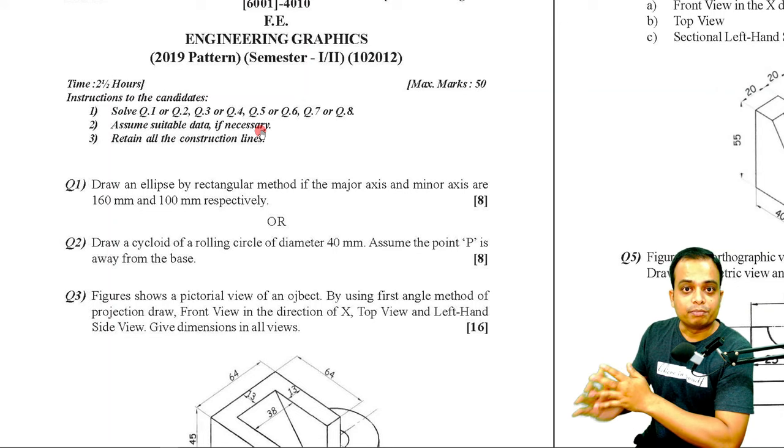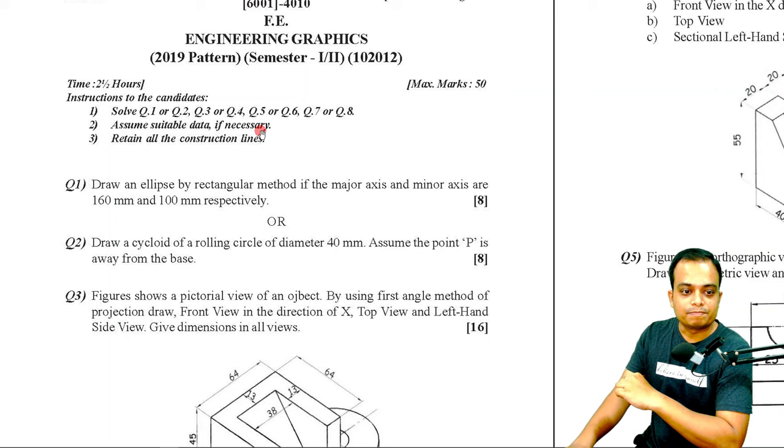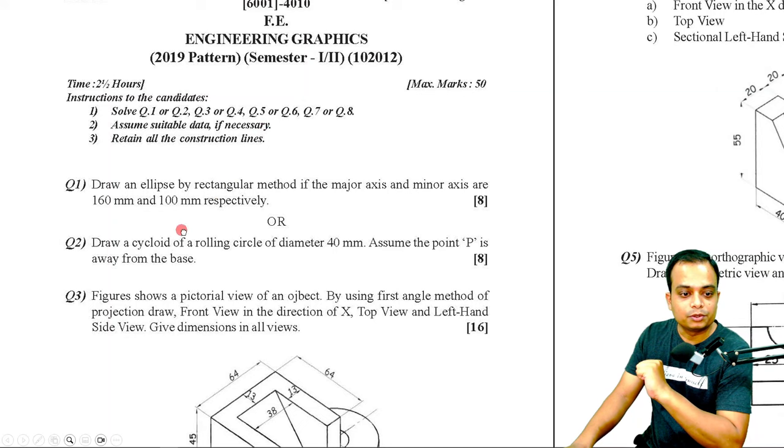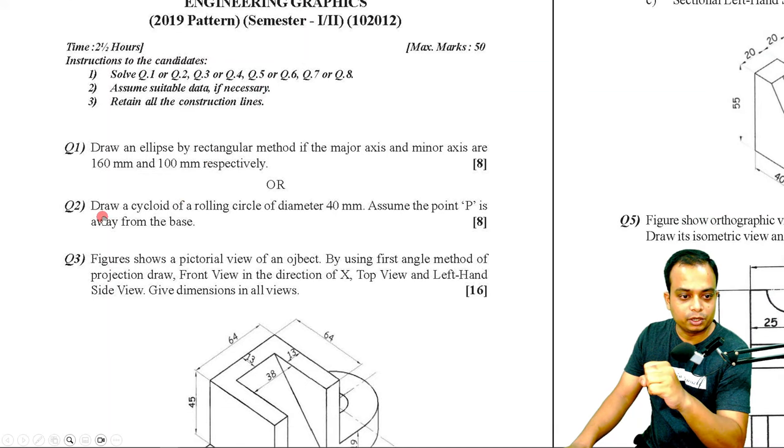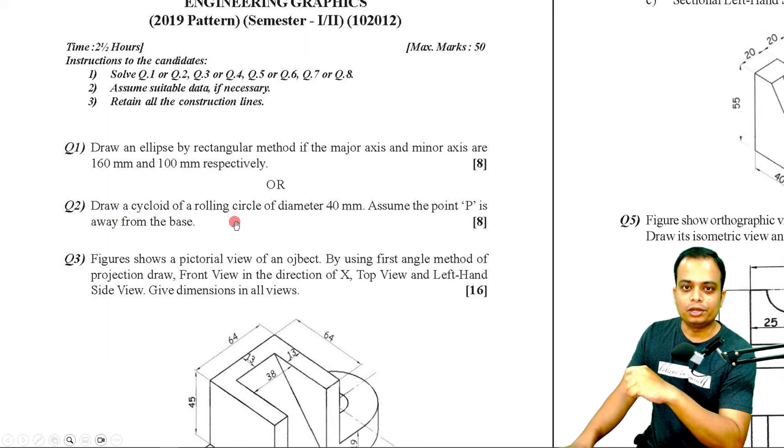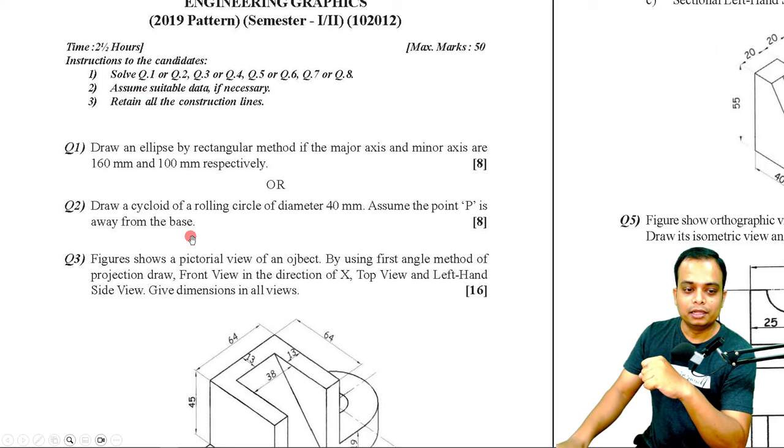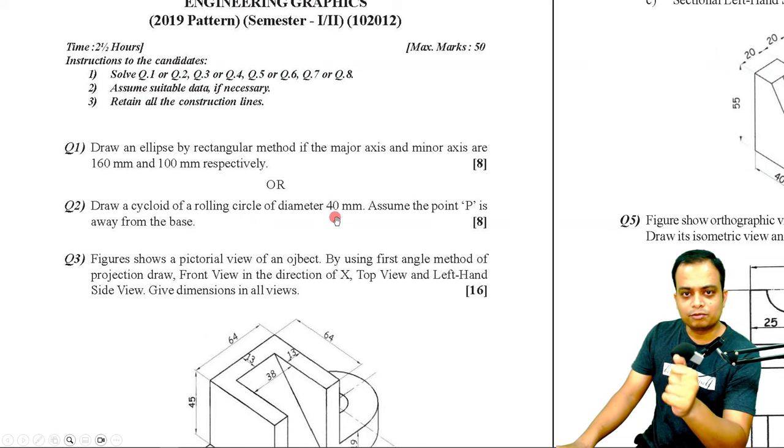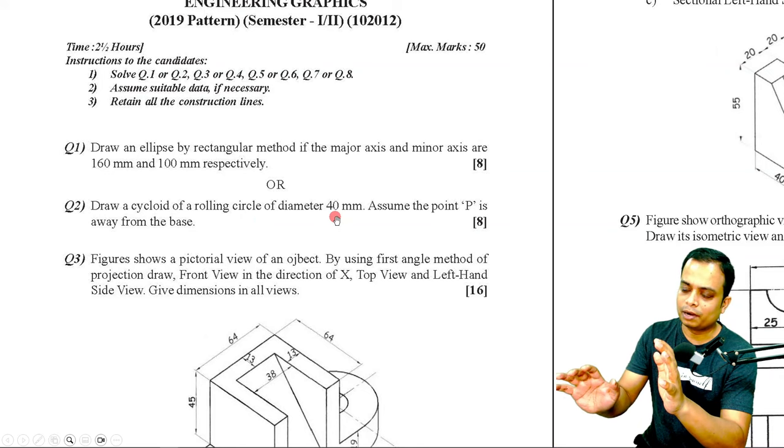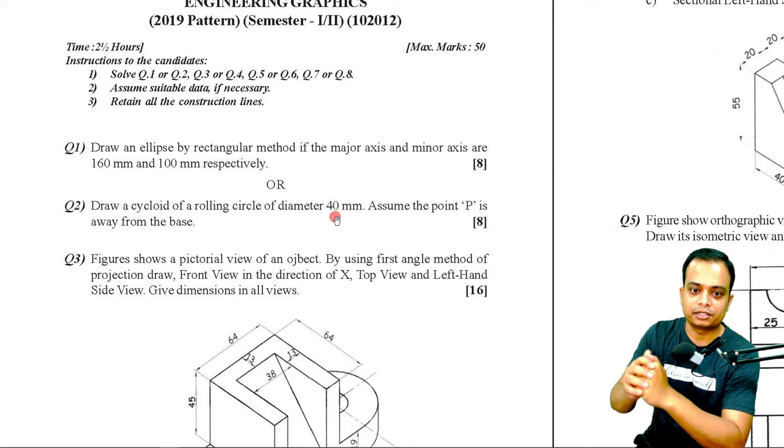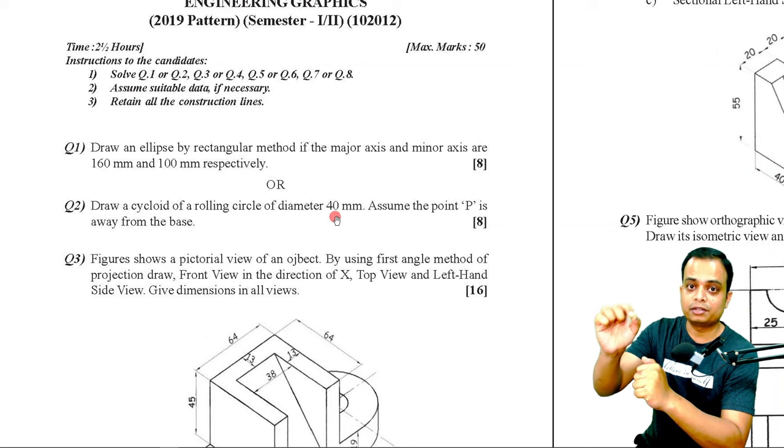April 2023 engineering graphics question paper from the University of Pune, popularly known as SPPU. So here we have this question number two: draw a cycloid of a rolling circle of diameter 40 mm. Assume the point P is away from the base. Now some students who have not read the chapter well will assume that we need to create a cycloid that has been clearly written and the rolling circle's diameter is 40 mm. So they are going to apply the entire process of cycloid construction. But this is a special case of a cycloid.